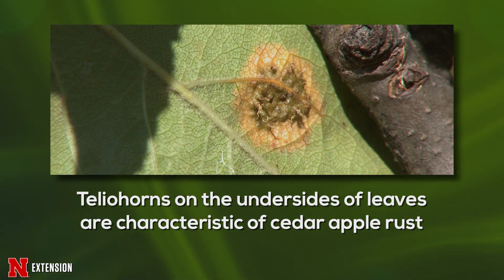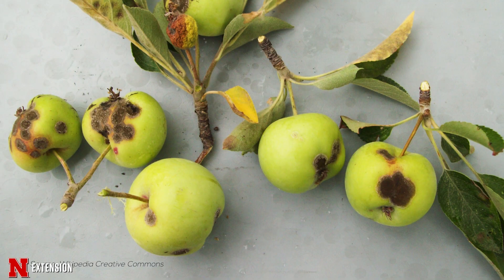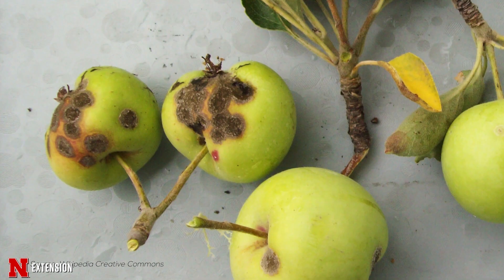The biggest foliar symptom for apple scab is general yellowing of the leaves with some green islands remaining. Apple scab also can infect the fruit. When it infects the fruit, we get a cracked lesion — as the name implies, it looks a little bit scabby. In addition to that scabby appearance, it can cause fruit deformation and reduced fruit size.